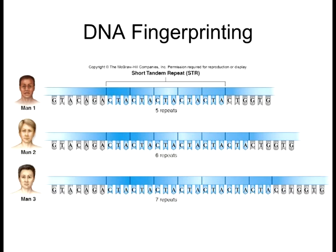For example, one person has short tandem repeats that repeat five times — the sequence CTA, CTA, CTA five times. Another person has seven of those repeats — CTA, CTA, CTA seven times. Remember what we talked about with gel electrophoresis: if one person has repeats seven units long and another has repeats five units long, which one runs a little bit faster? The five, because it's shorter. The fewer the nucleotides, the faster it runs on the gel.